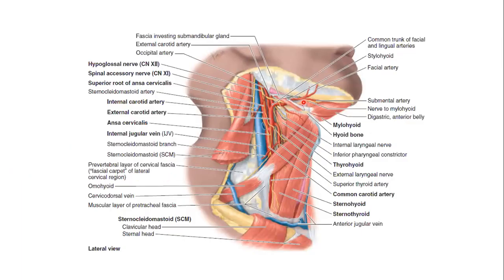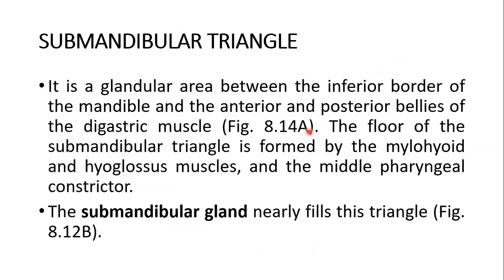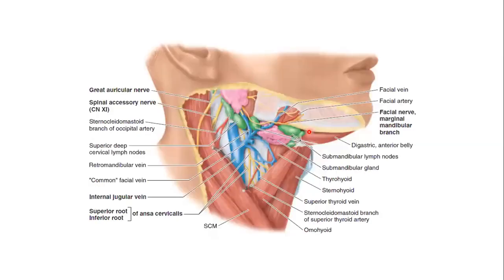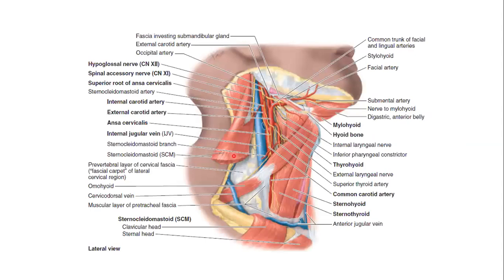Moving on. You can see this is the facial artery — the contents of the submandibular triangle. This is the facial artery. Then the submental artery, which is a branch of the facial artery. So the third structure is the nerve to mylohyoid, coming from the mandibular division of the trigeminal nerve — nerve to mylohyoid. And this is the digastric and the nerve to the digastric as well, coming from the mandibular nerve. These are the things of the submandibular triangle. You can also find the hypoglossal nerve in this area, quite visible over here.